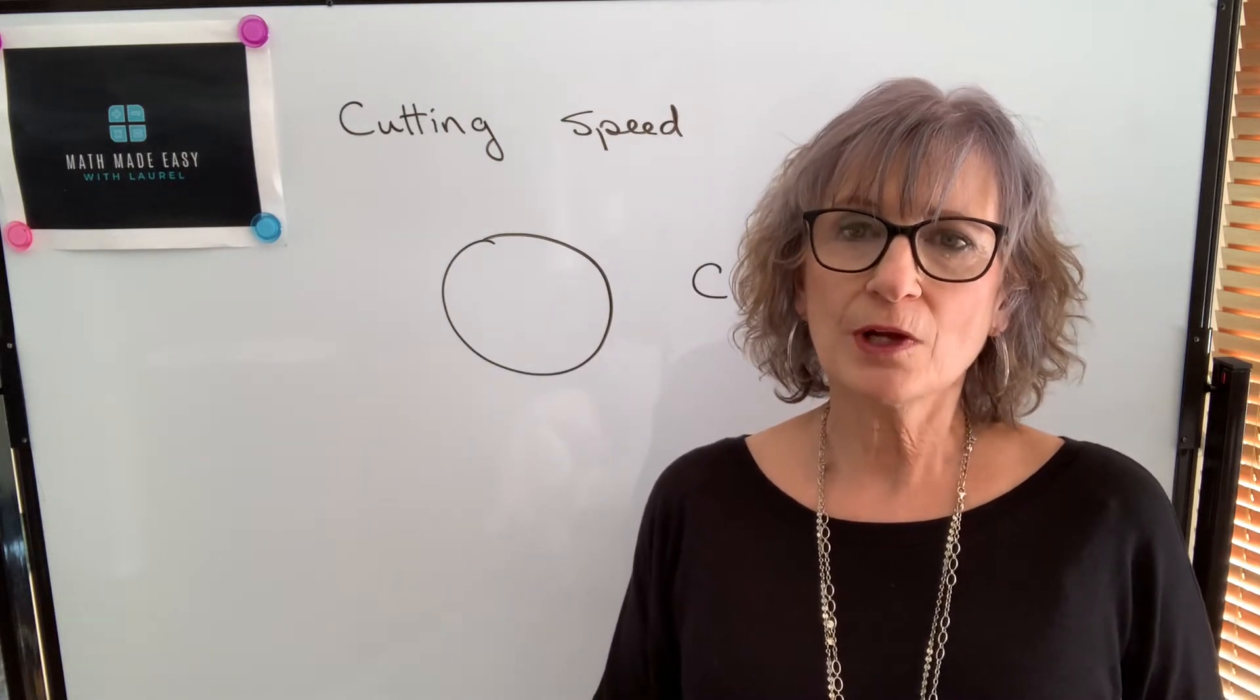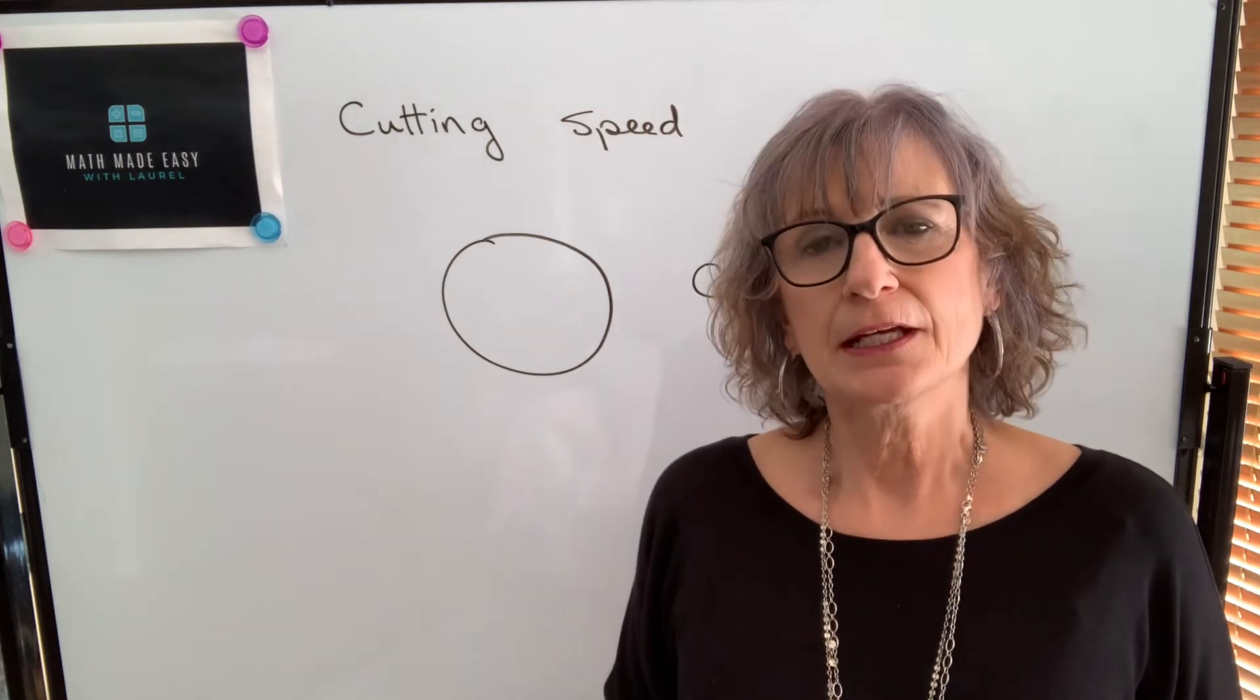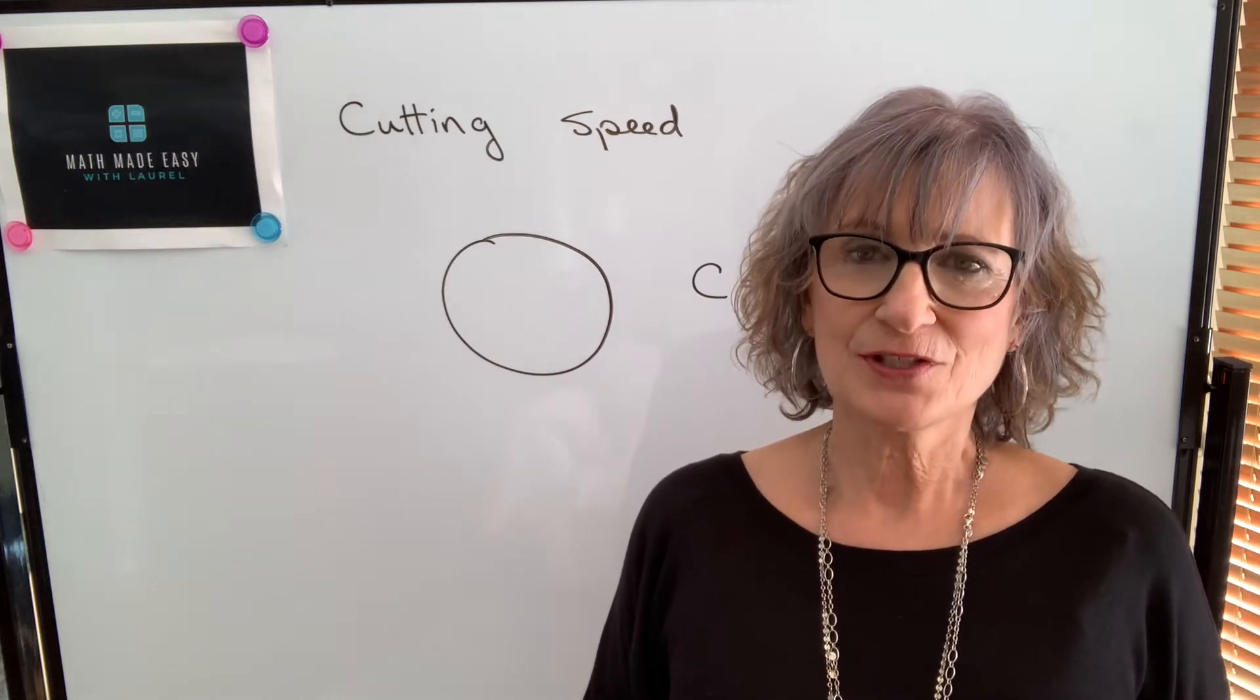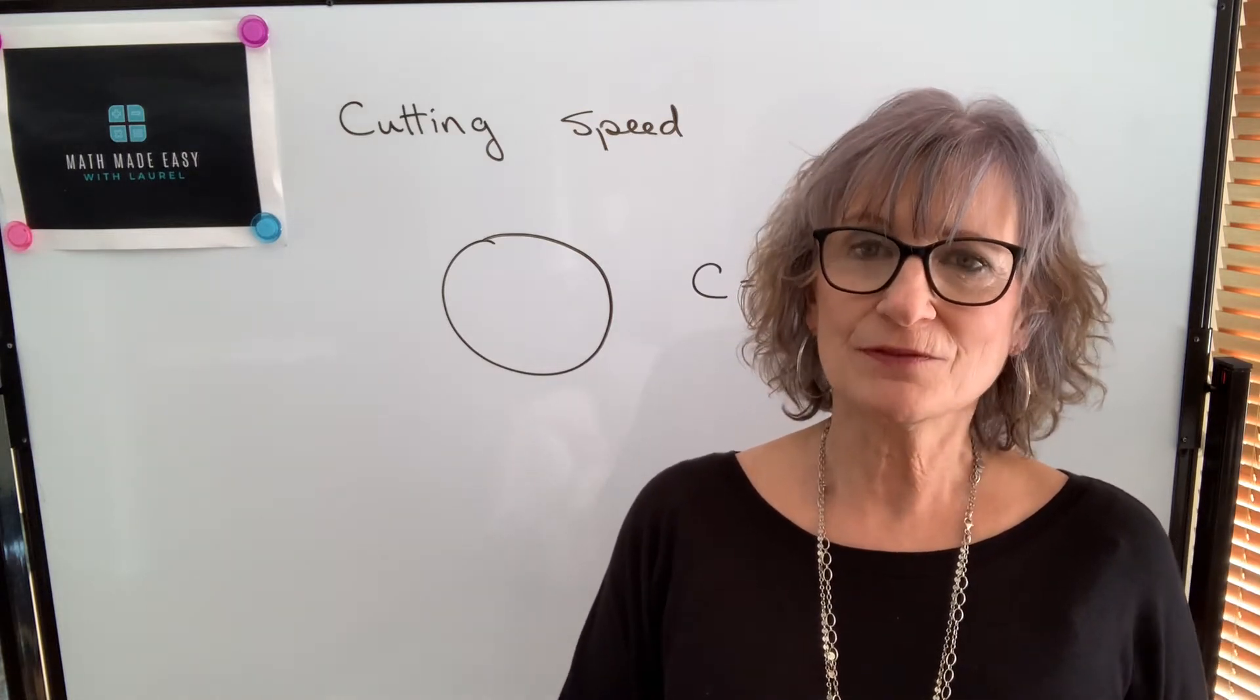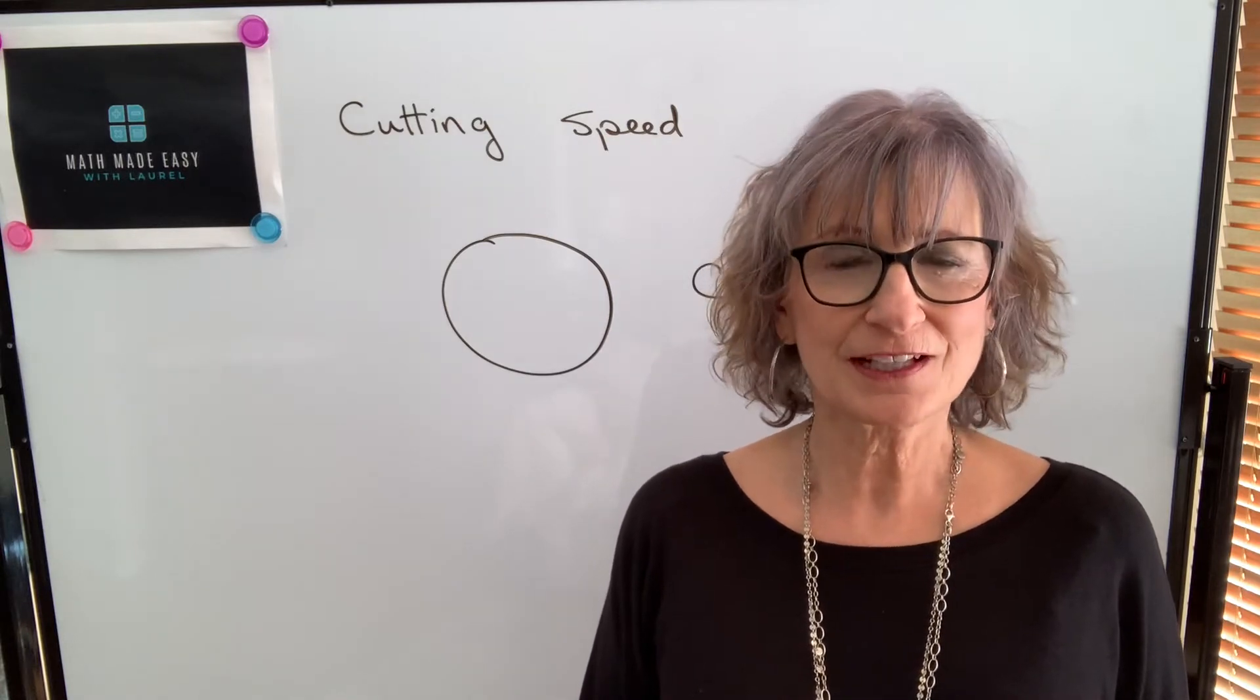If we know how many revolutions per minute that tool or that piece is turning, then we can find the distance in a minute. And if our diameter is in inches, we can change it to feet by dividing by 12. So it's exactly the same formula as for calculating belt speed.